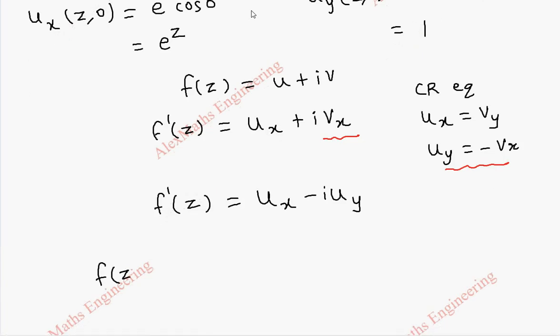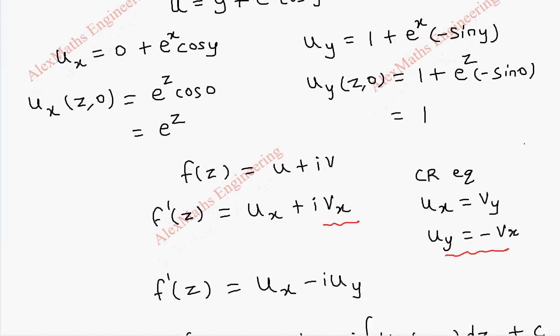By the Milne-Thomson method, f(z) = integral of u_x(z, 0) dz - i times integral of u_y(z, 0) dz + c.